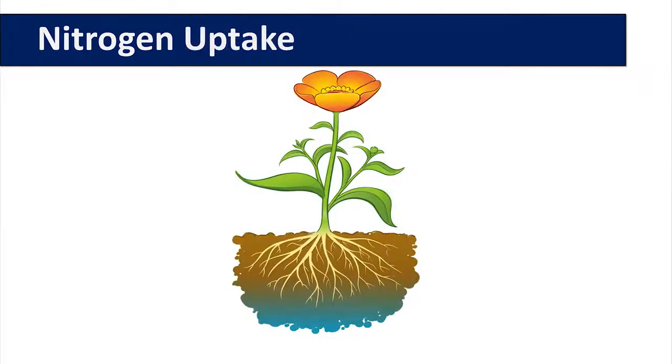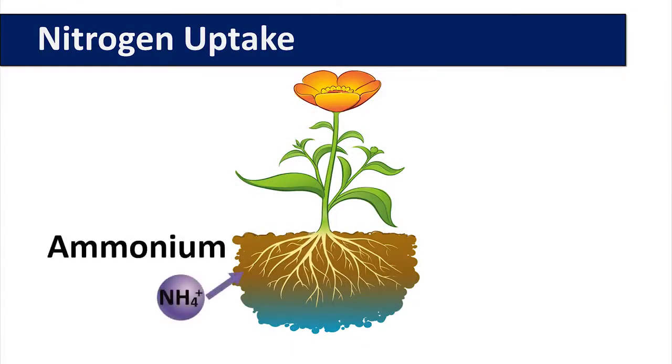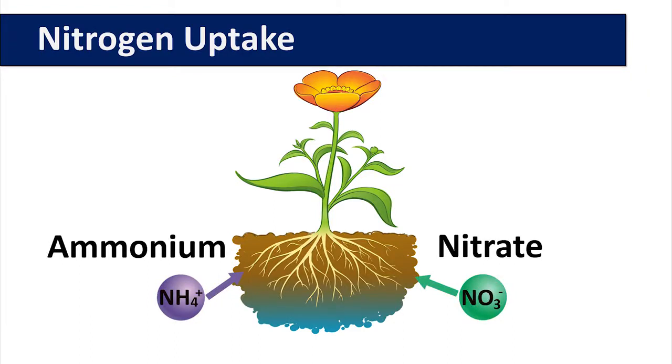Nitrogen can be taken up in two forms by plants: as either ammonium or nitrate. Ammonium is taken up passively.